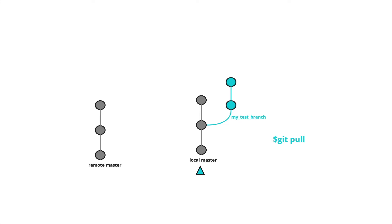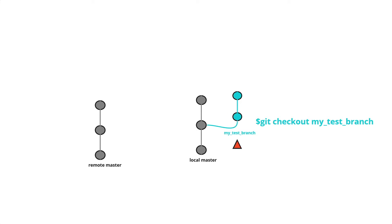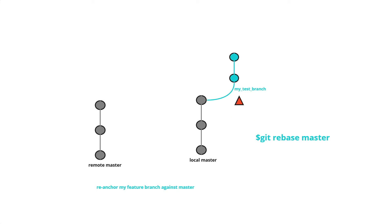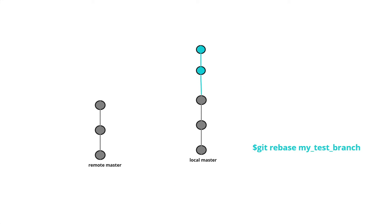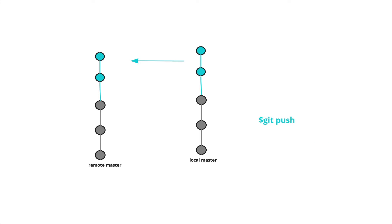After your local master is in sync with the remote master, check out your feature branch and perform a rebase against master. Now your feature branch has no conflicts and is up to date. You can then check out master and rebase the feature branch onto it — this replays all the feature branch commits on top of master. Your local master branch is now ready to push to production with a simple git push.